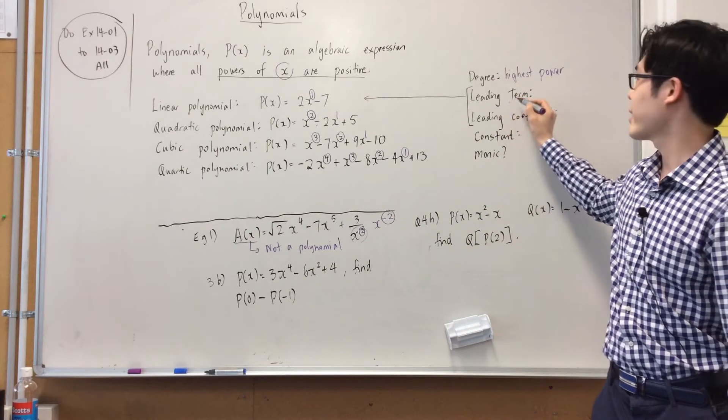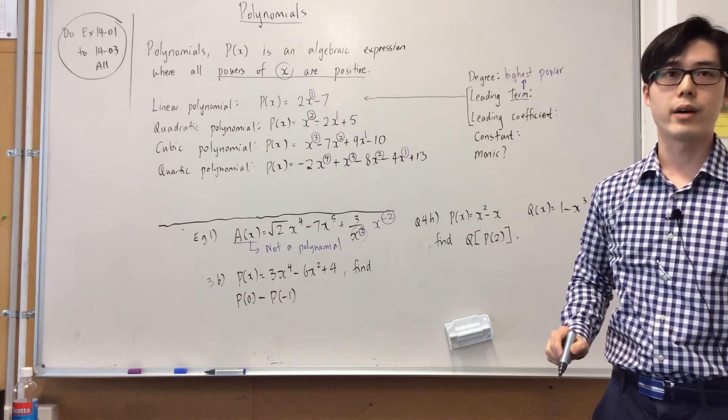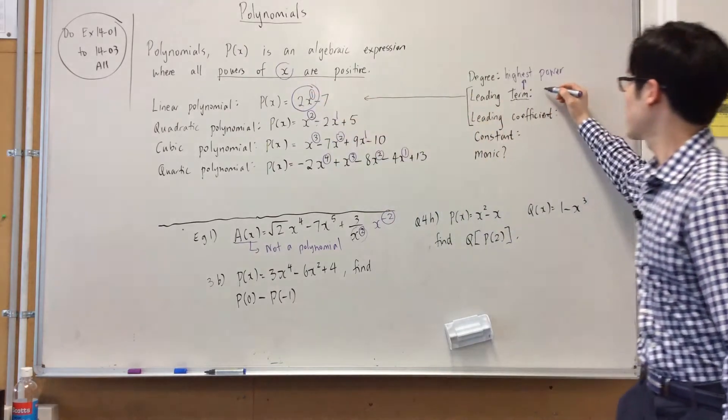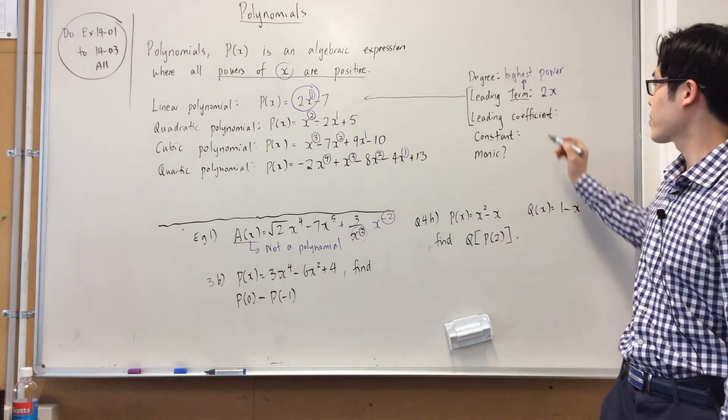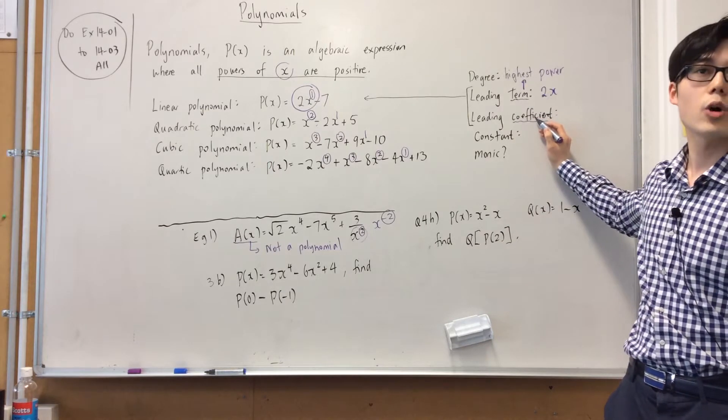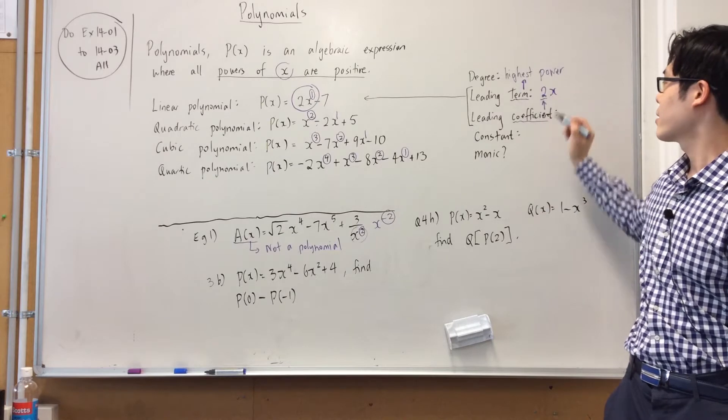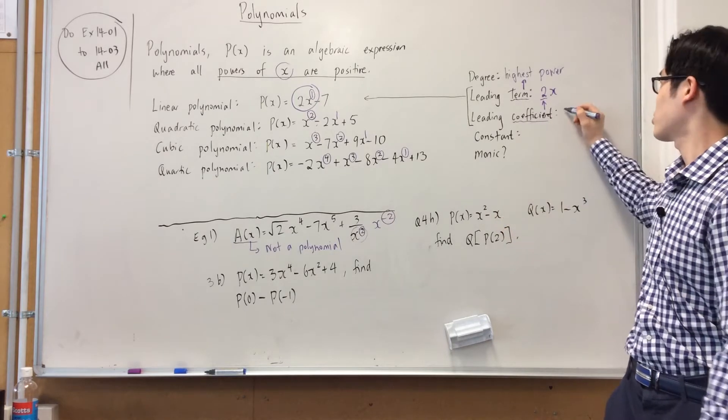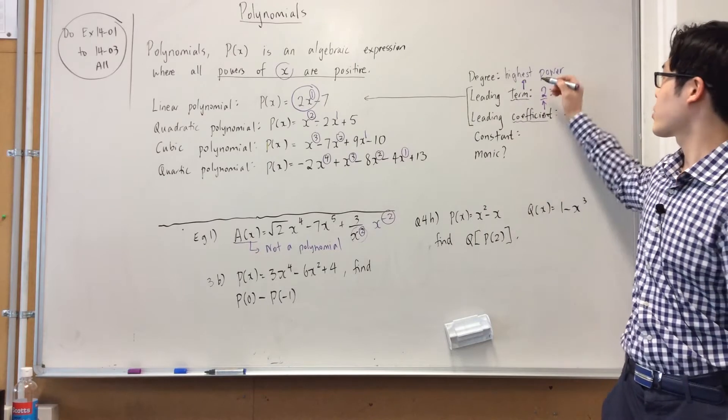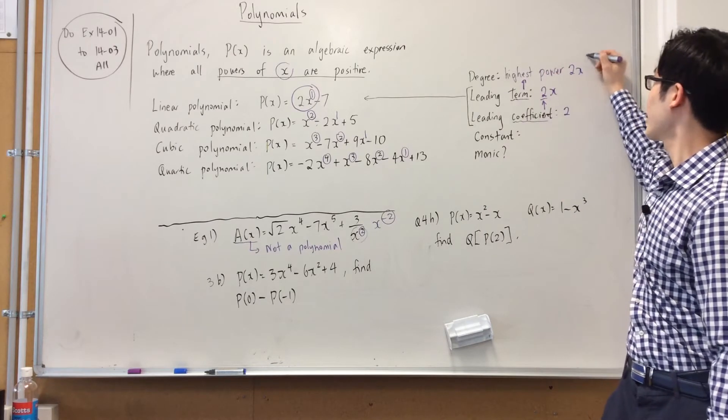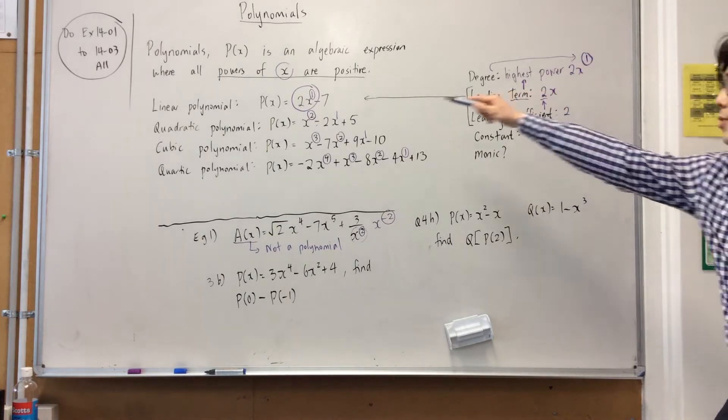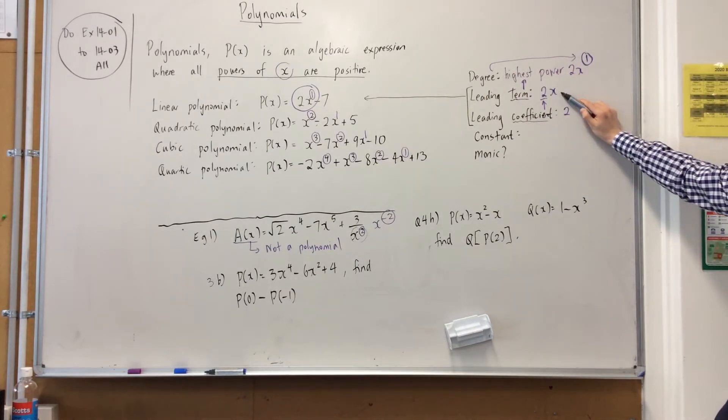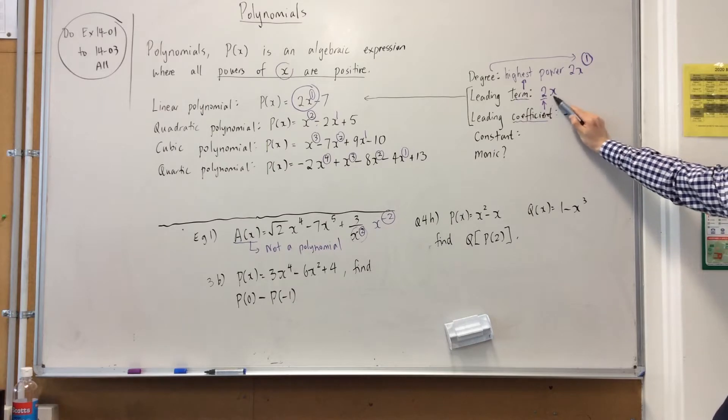Now, the leading term is the term with the highest power. So, this is the leading term. It's the term with the highest power. Right? Now, girls, the leading coefficient is the number in the highest power. So, two. Okay? What's the difference between degree and leading? Degree is the actual power itself. So the degree from the first one is one. The leading term is 2x. The leading coefficient is just the number in front of x, or the highest power.